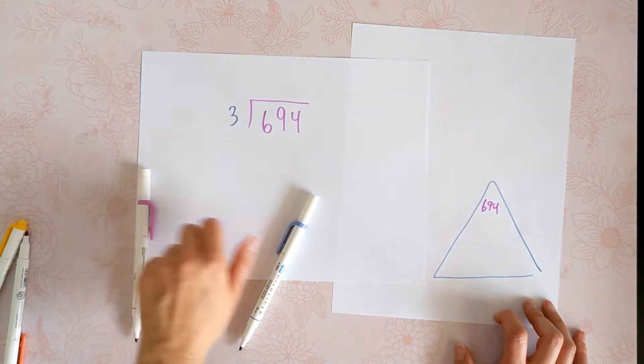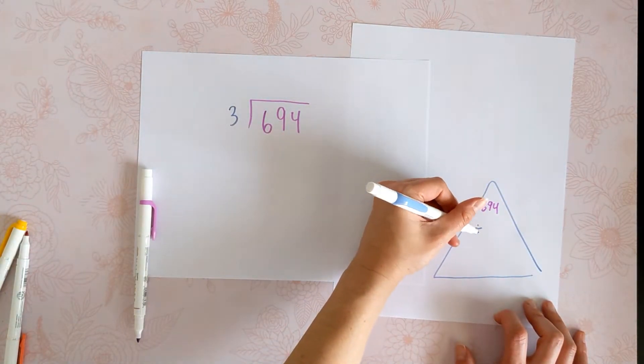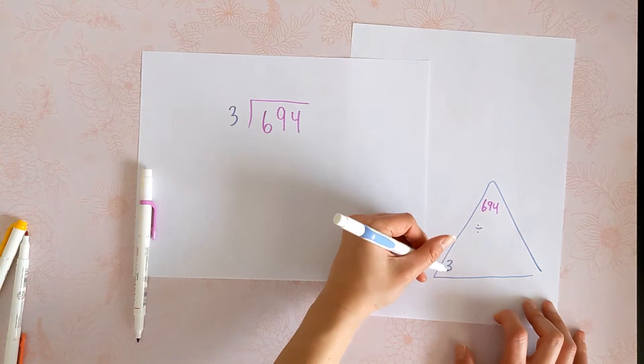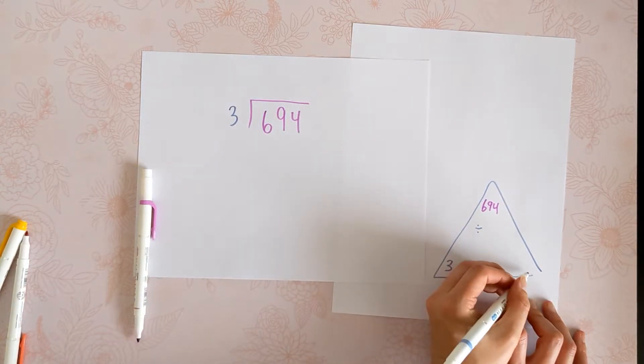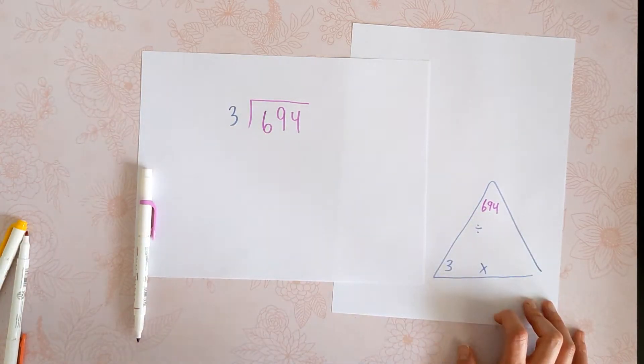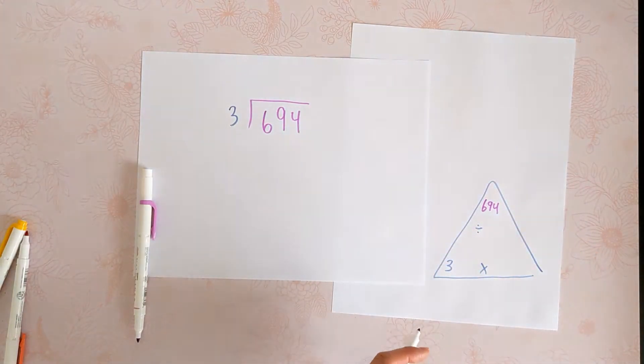694 divided by 3 — in other words, we're also saying 3 times what equals 694, because division and multiplication are related.